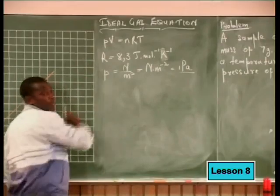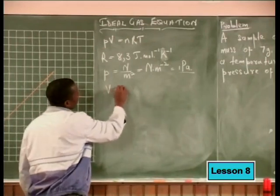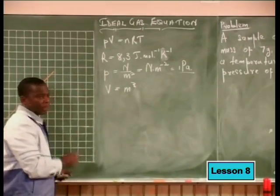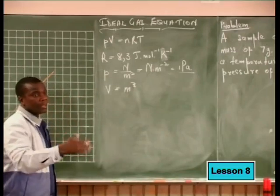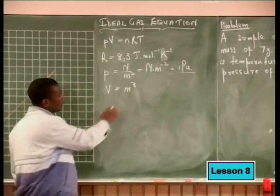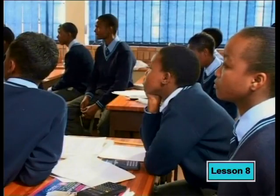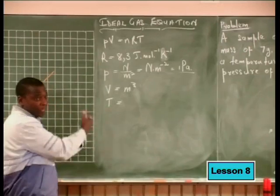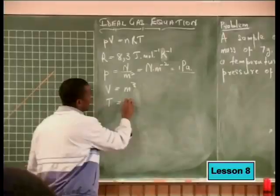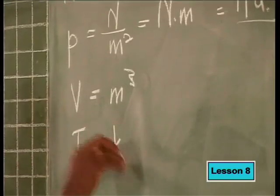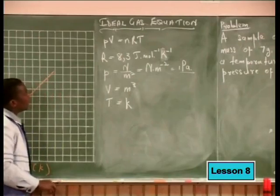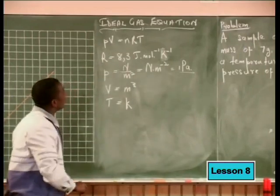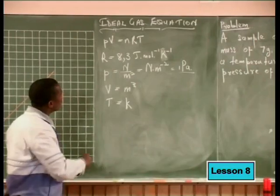The SI unit for volume is meters cubed. So always when you use this equation, remember that your volume, even if given in cubic centimeters, must be changed to cubic meters. The temperature must be in Kelvins. And the universal gas constant is 8.3 Joules per mole per Kelvin.